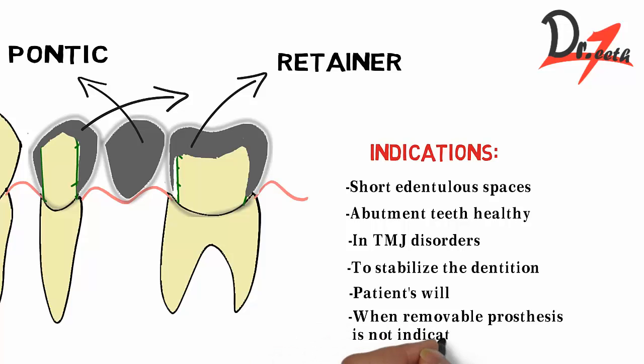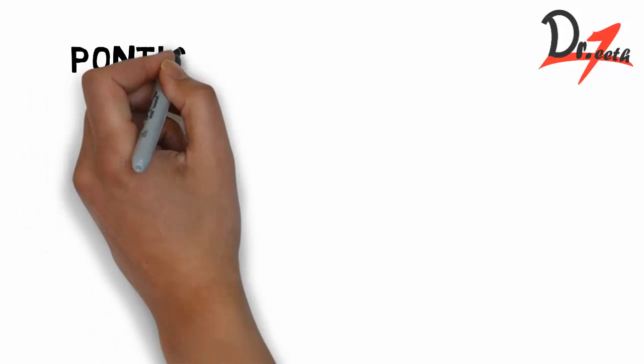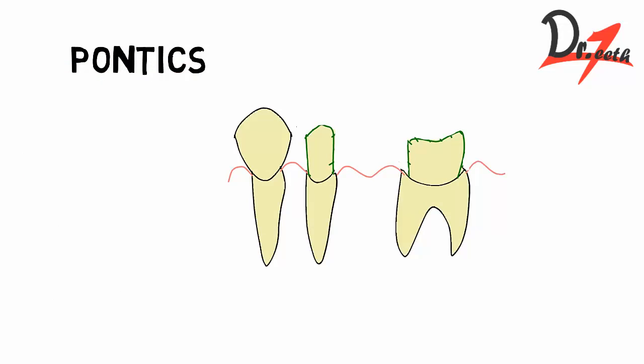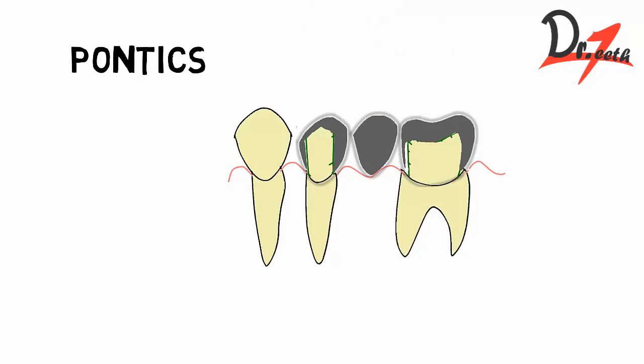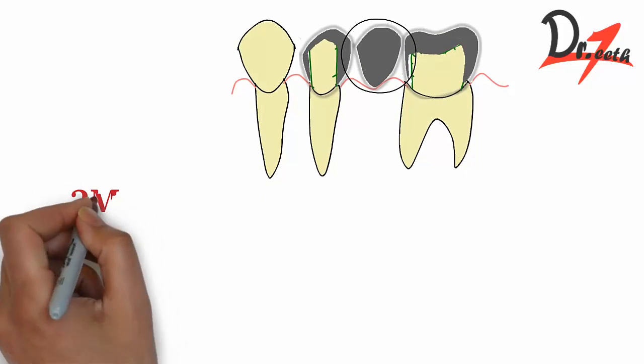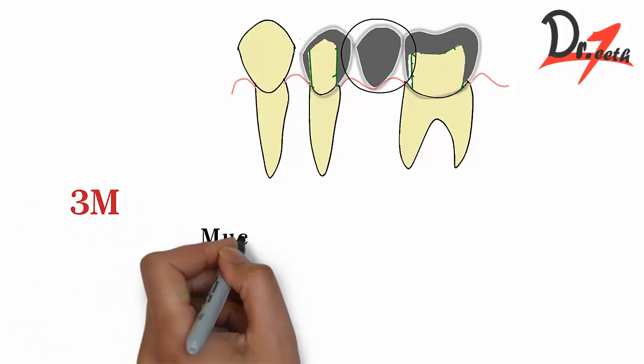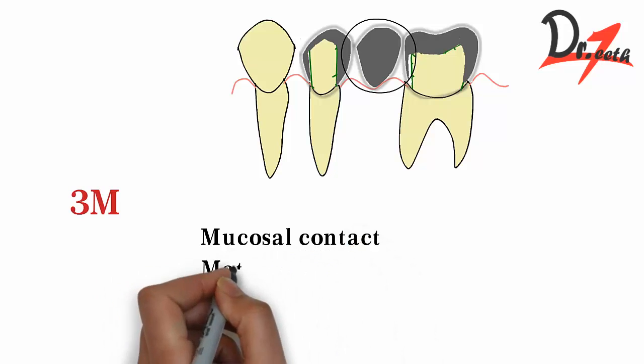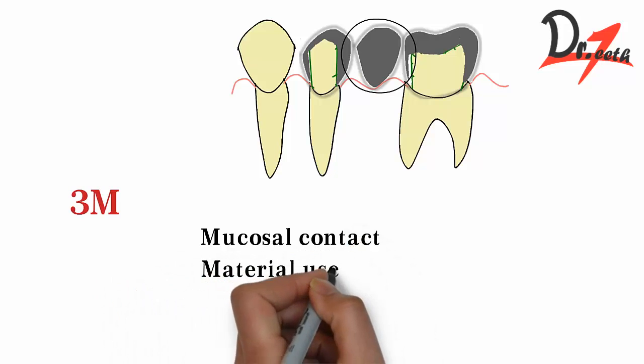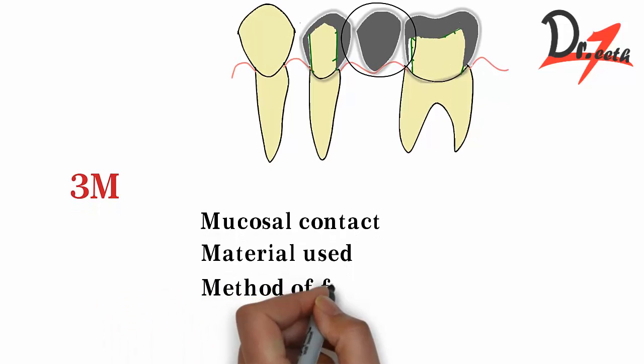Let's talk about pontic. Pontic is that artificial tooth that we are actually replacing the missing tooth. The portion we are showing in the circle, that is my pontic. Now its classification which has three types. Three M's are basically mucosal contact, material used, and method of fabrication.